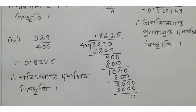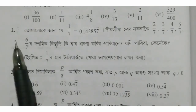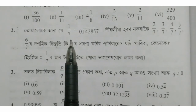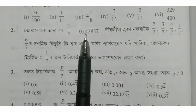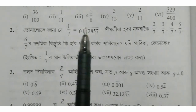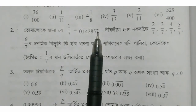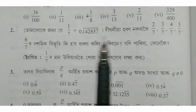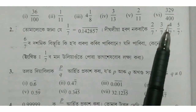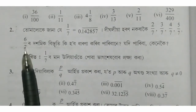So, this is question number 2. 1 by 7 is equal to 0.142857. 12 is equal to 1 or 7. Then we will have 2 by 7, 3 by 7, 4 by 7, 5 by 7, 6 by 7.